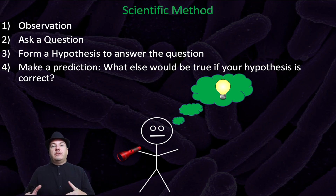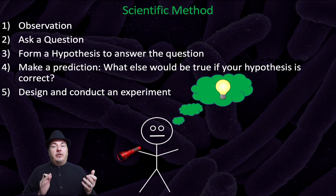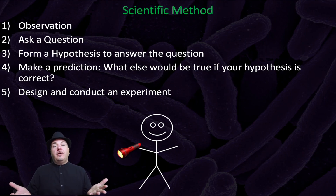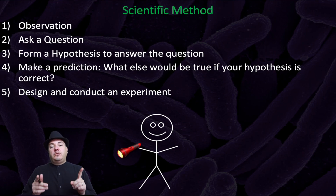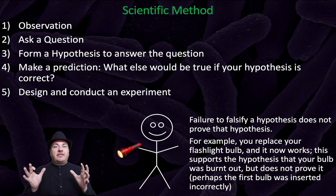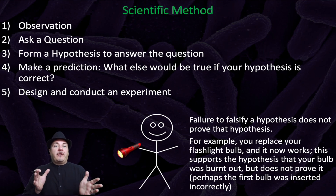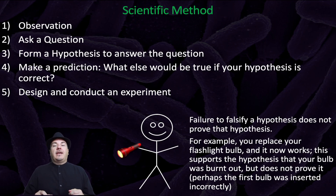Design and conduct an experiment — take out the old bulb and put in a brand new bulb. Your flashlight is now working! But you did not actually prove your hypothesis — you simply failed to falsify it. That sounds very weird, like a double negative, but you didn't actually prove it; you simply failed to falsify it. Your hypothesis could actually still be wrong.